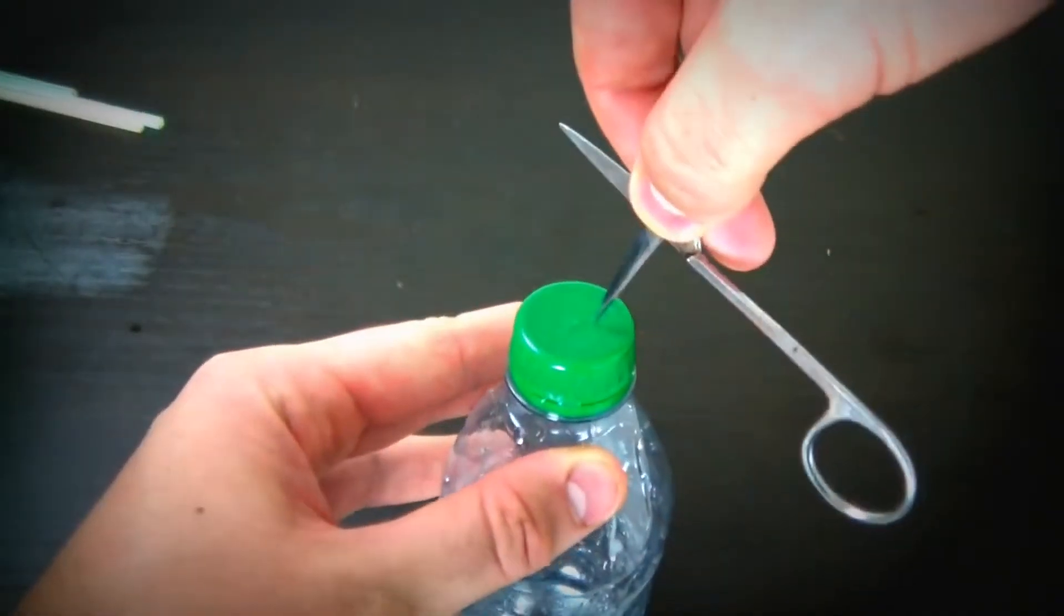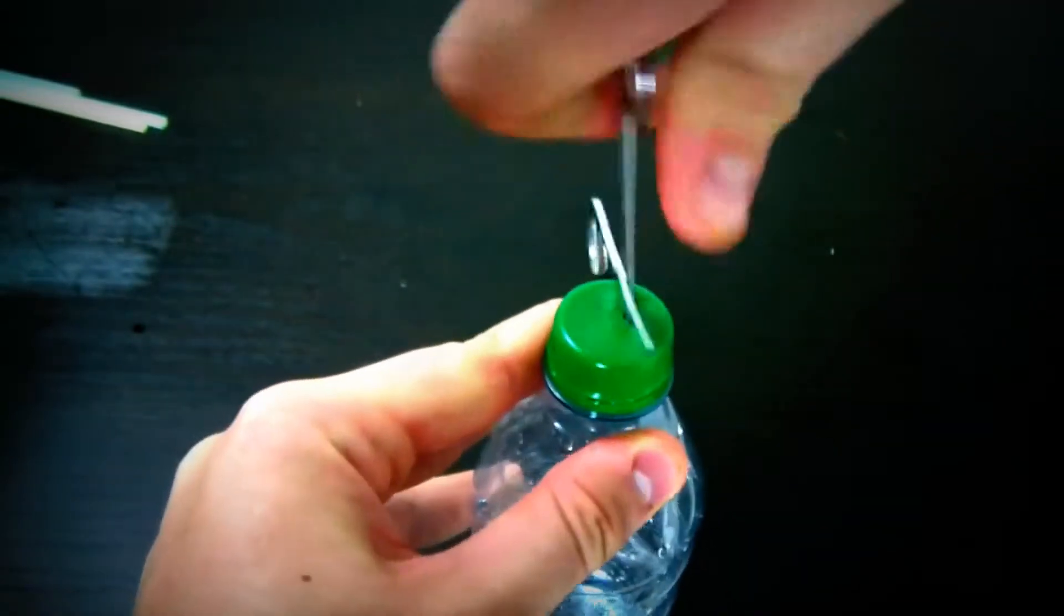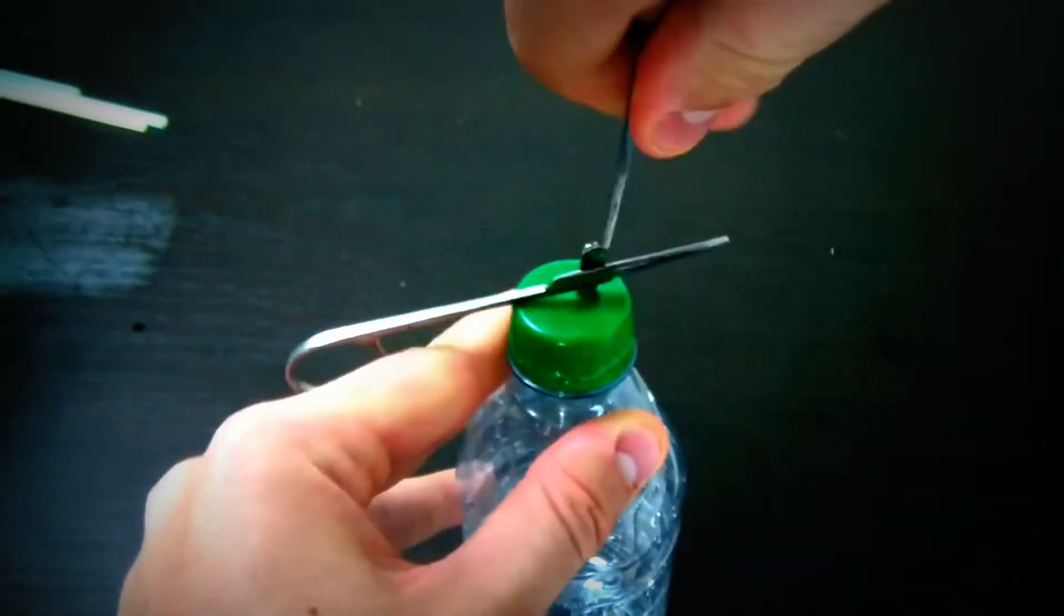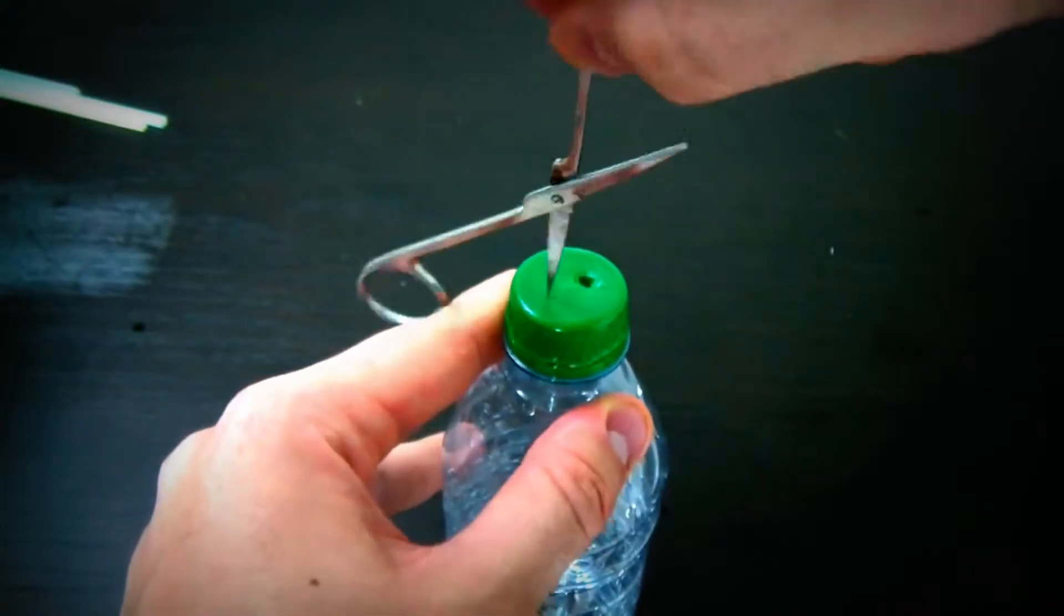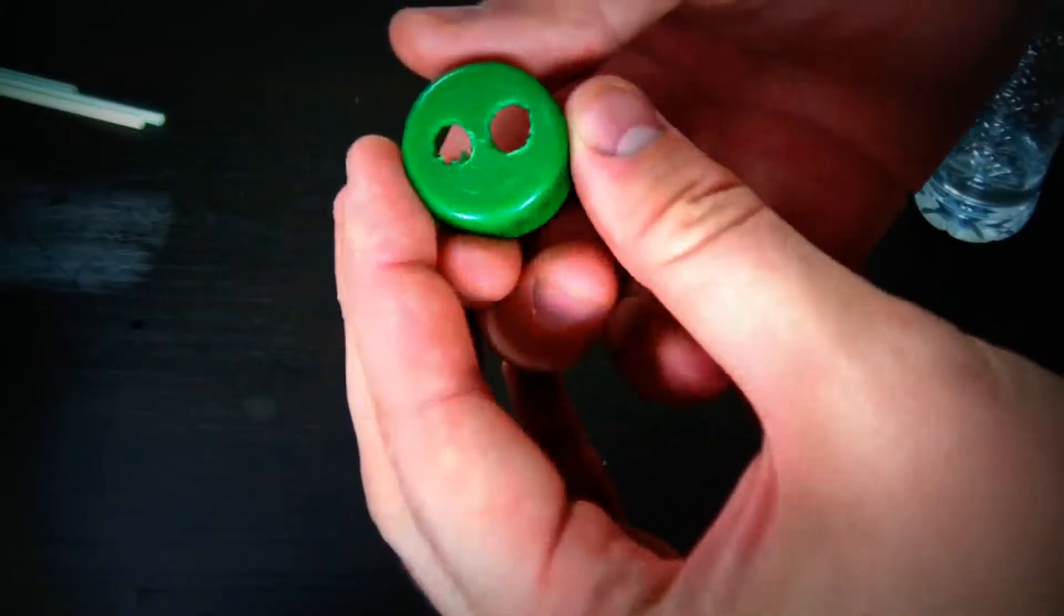First we're gonna need to make two holes. Right here. Get a scissor, punch it through, and spin it around. Same thing over here. That's gonna look like that.